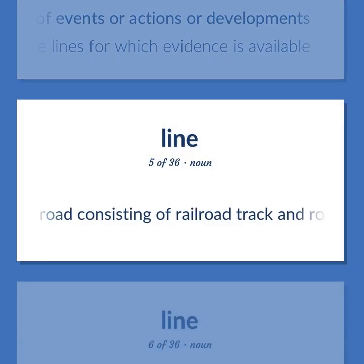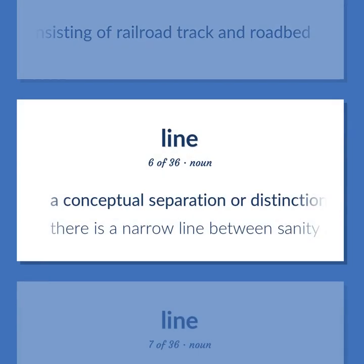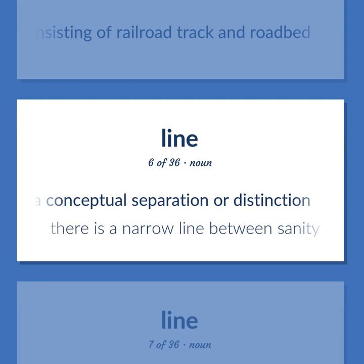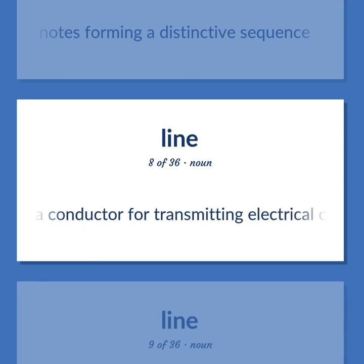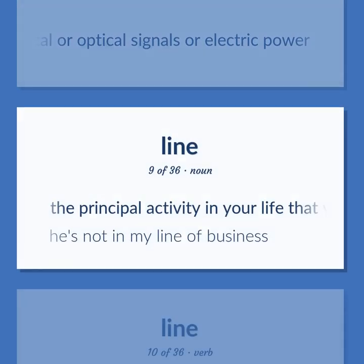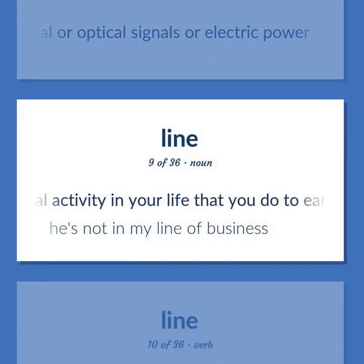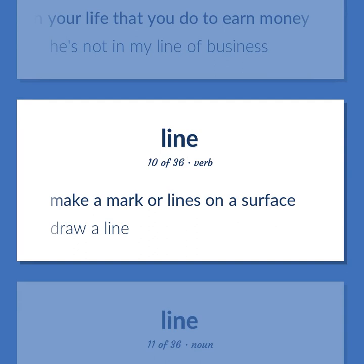Line: the road consisting of railroad track and roadbed. A conceptual separation or distinction. Example: there is a narrow line between sanity and insanity. A succession of notes forming a distinctive sequence. A conductor for transmitting electrical or optical signals or electric power. The principal activity in your life that you do to earn money. Example: he's not in my line of business. Make a mark or lines on a surface. Example: draw a line.